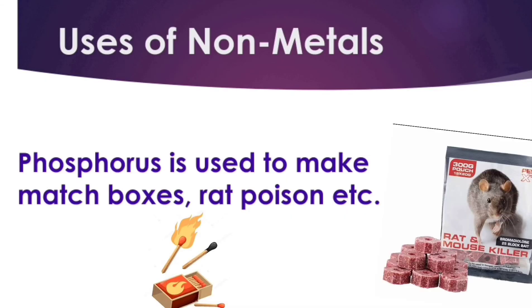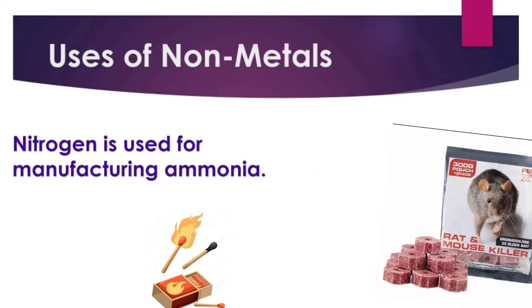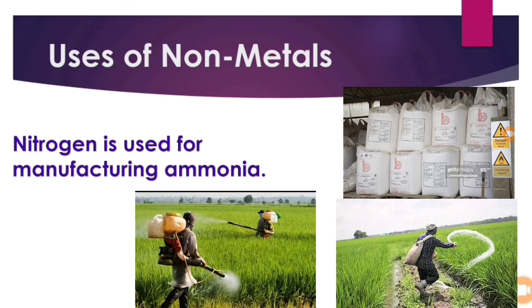Phosphorus is used in matchsticks, matchboxes, and rat poisons. Nitrogen is used for manufacturing ammonia. About 80% of the ammonia produced by industry is used in agriculture as a fertilizer.